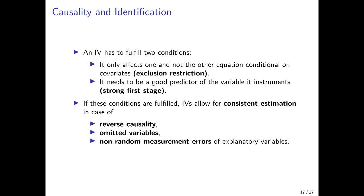And therefore get rid of reverse causality issues, omitted variables that bias the results and of the effects of non-random measurement errors of explanatory variables. So if these two conditions are fulfilled, and we find such an instrument, then we can use it to get rid of the problems that I've mentioned here.